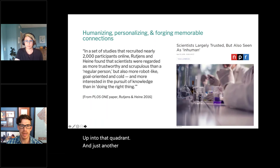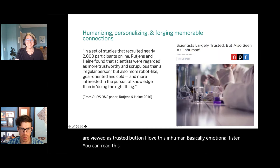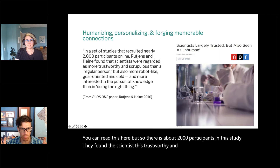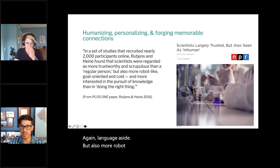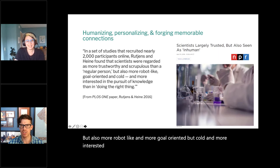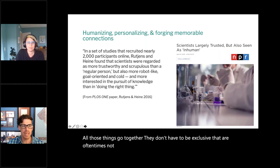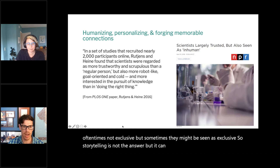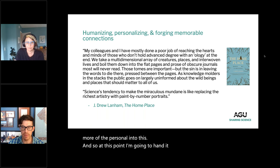A 2016 study with about 2,000 participants found that scientists are regarded as trustworthy and scrupulous, but also more robot-like and goal-oriented — cold, and more interested in the pursuit of knowledge than in doing the right thing. Those things don't have to be mutually exclusive, but sometimes they're seen that way. Storytelling is not the answer, but it can be an answer to inject more of the personal into how scientists are perceived.